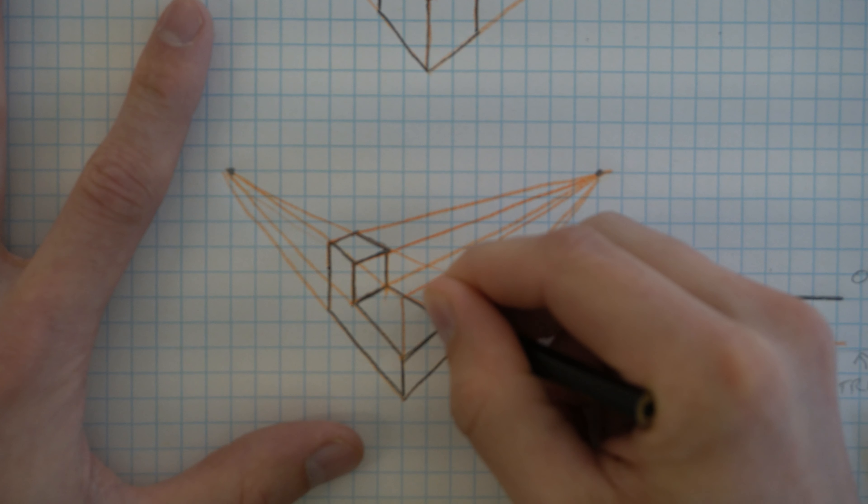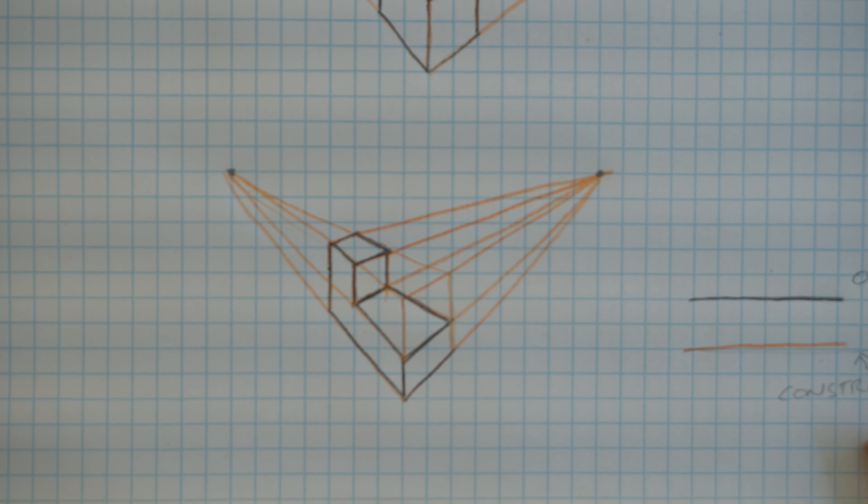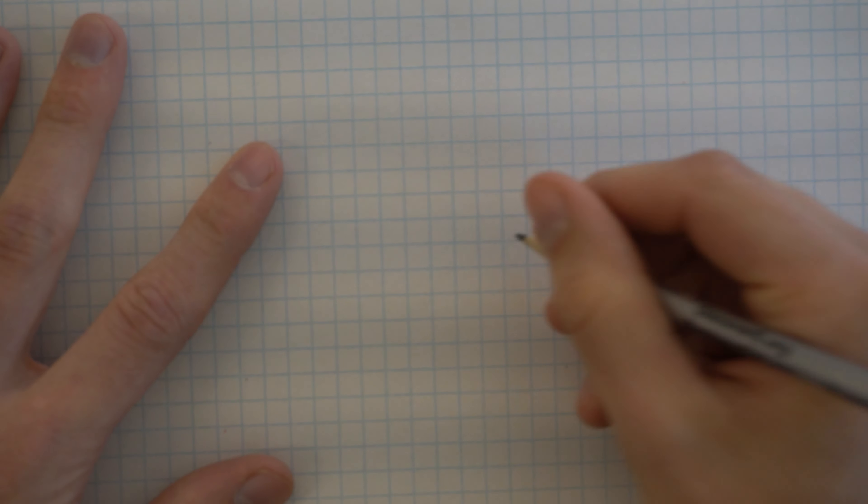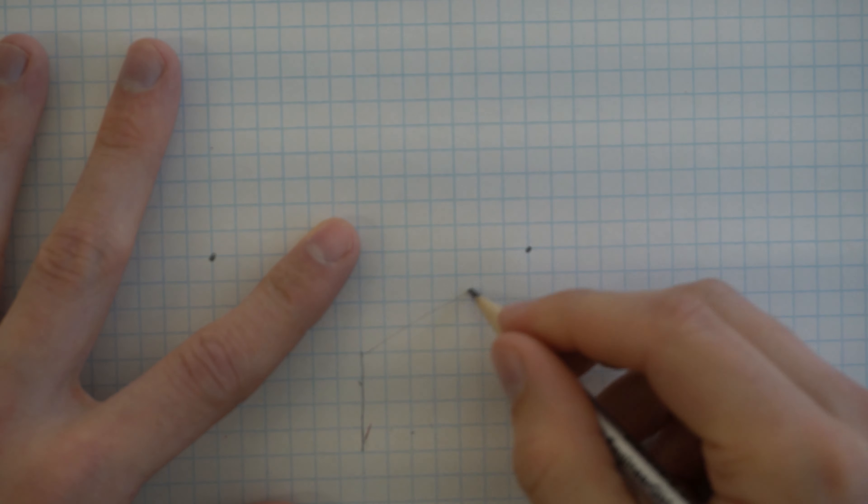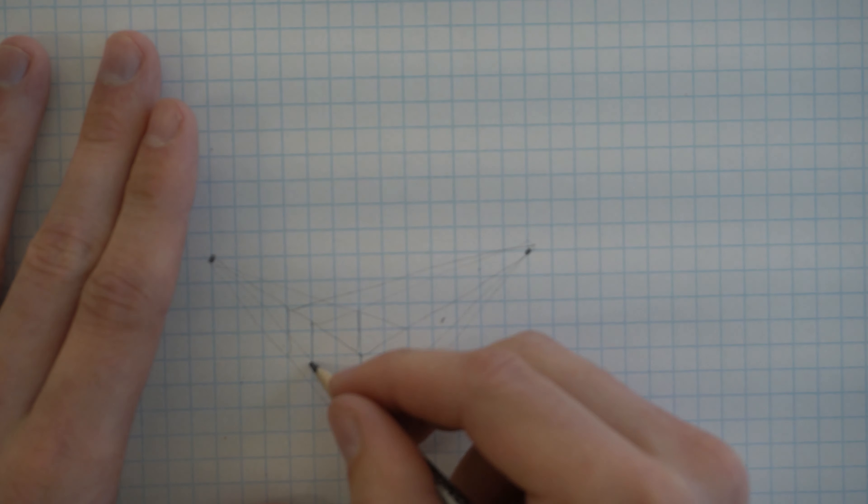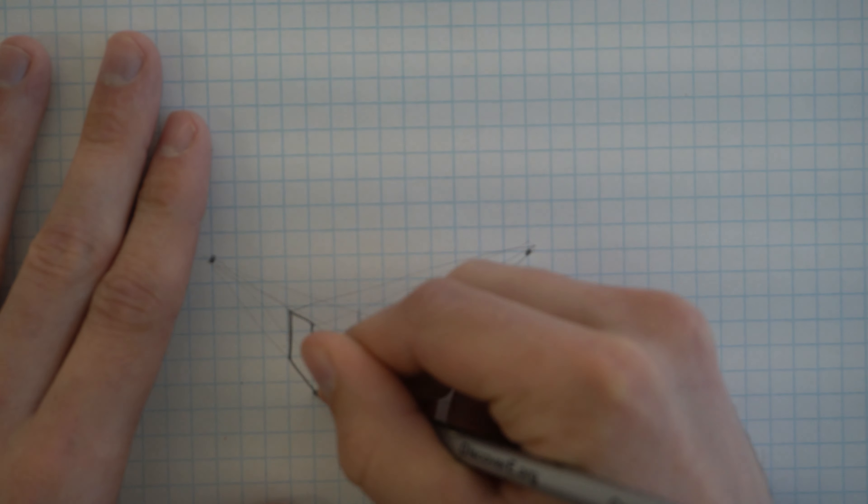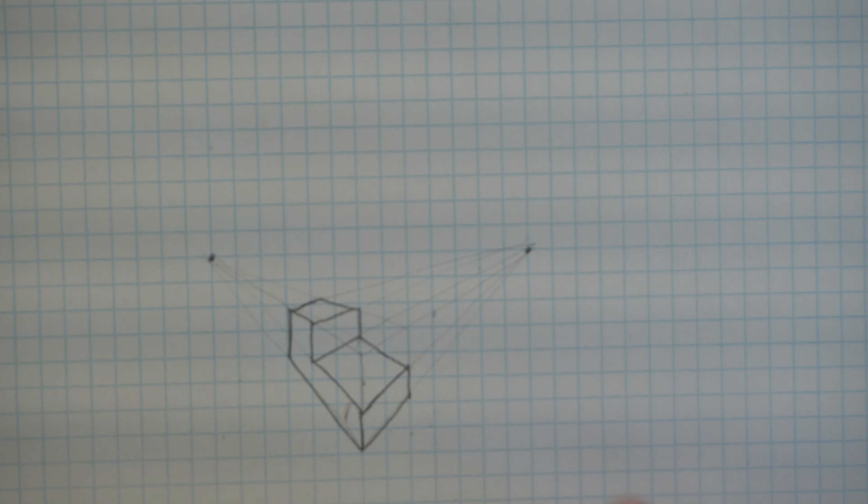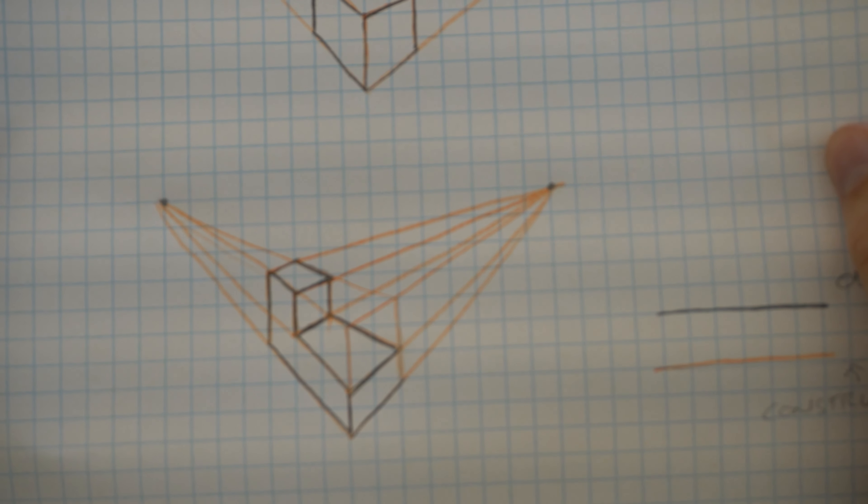Now, obviously, if you were doing this with construction lines on paper, you'd be able to erase all of this and it would look a lot nicer. I'm actually going to do a quick jump to what that should look like. If we had done this with construction lines, it would look more like this. Which is a little less confusing than what we've got here with all that orange.